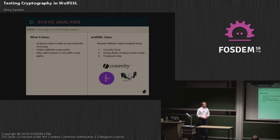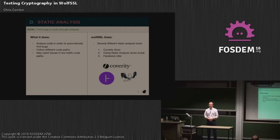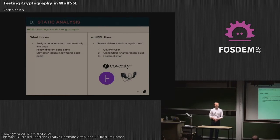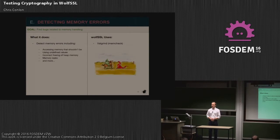The next thing we do is static analysis. The goal is to find bugs somewhat automatically by using static analysis tools. These tools follow different code paths — ones that developers may not have tested when working on a feature, or less frequently used code paths. To do this we use the Coverity scan tool, the Clang scan-build, and we recently started using the Facebook Infer tool, which is a new static analysis tool being developed by Facebook.